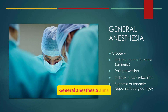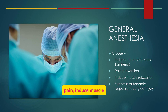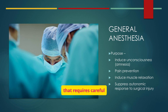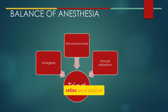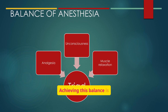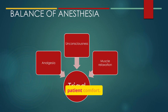General anesthesia aims to induce unconsciousness, prevent pain, induce muscle relaxation, and suppress autonomic responses to surgical injury. Balanced anesthesia relies on a triad of effects: unconsciousness, analgesia, and muscle relaxation. Achieving this balance is essential for providing optimal surgical conditions and patient comfort.